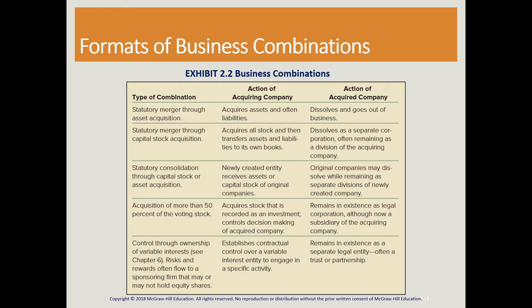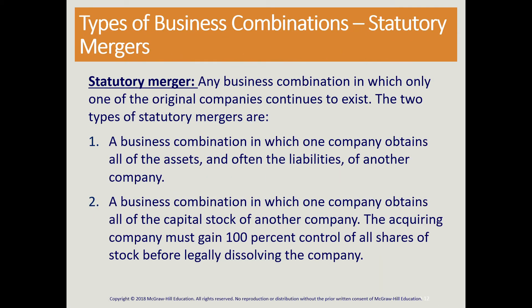Exhibit 2.2 shows a synopsis of the different types of combinations. We have the statutory merger, where one company purchases another company and either one of those two companies will dissolve, leaving one surviving company. This business combination can take place as either a purchase of assets and liabilities or a purchase of stock. In Chapter 2, we're talking about 100% control — purchasing the whole entire company — and the other company legally dissolves. Basically, company A purchases company B, and only one surviving company remains.